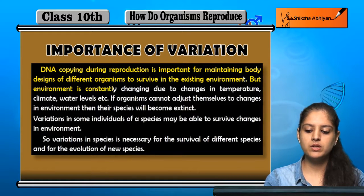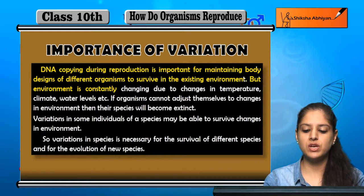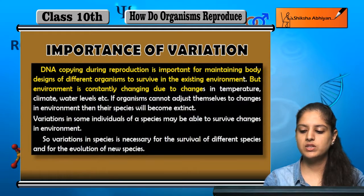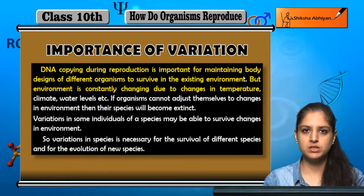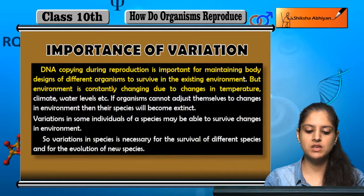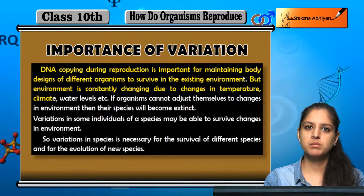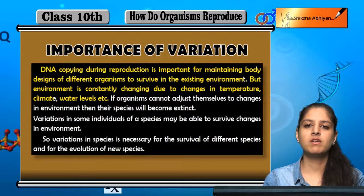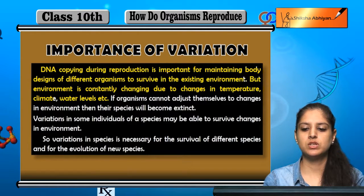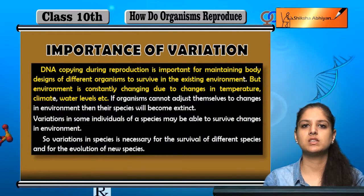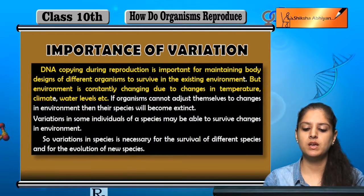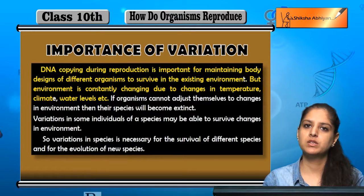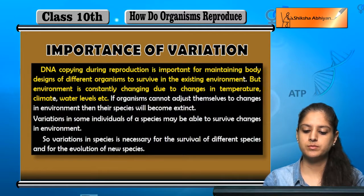DNA copying reproduction ke time par, it is important for maintaining body designs of different organisms to survive in the existing environment. Yeh variation hai — yeh environment mein survival ke liye zaroori hai. Lekin environment constantly change hoti rehti hai — temperature mein change ki wajah se, climate mein change ki wajah se, water level, etc. Bohot saari aisi cheezein hoti hain jo change hoti rehti hain, aur ultimately atmosphere environment change hota rehta hai.